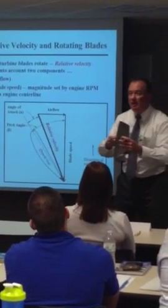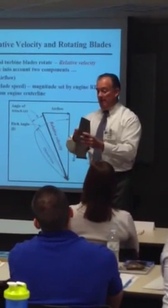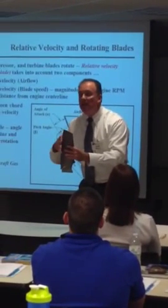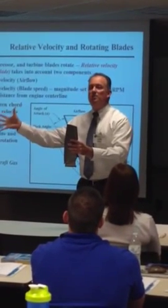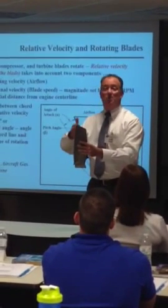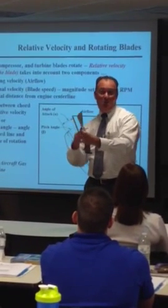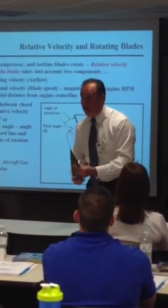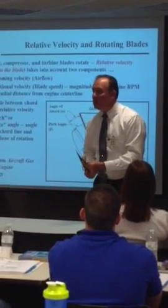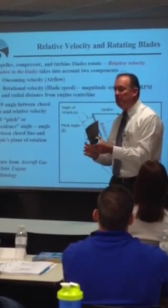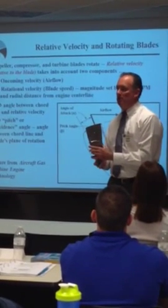Because what did we say? If the angle of attack gets too steep, it stalls. That's why these things are twisted and shaped and bent the way they are. It's exactly why. It's the physics of the situation.